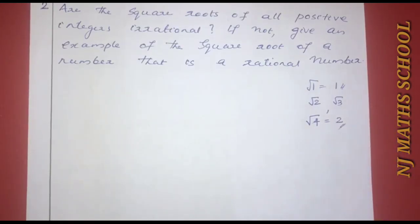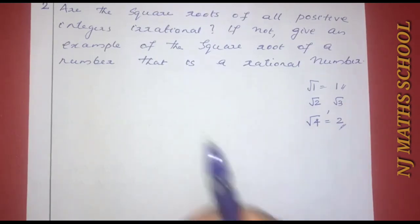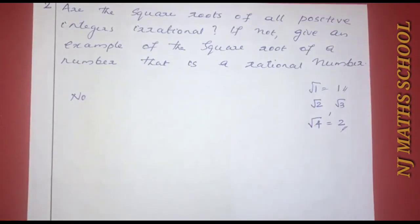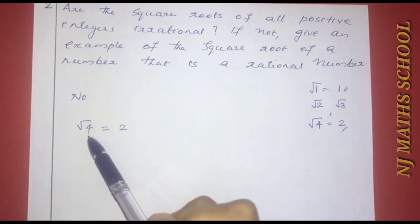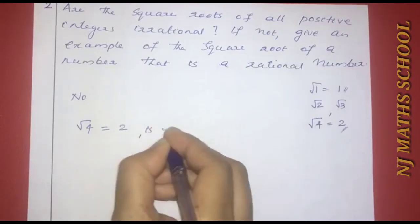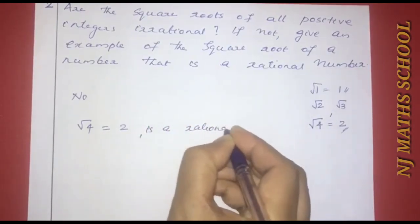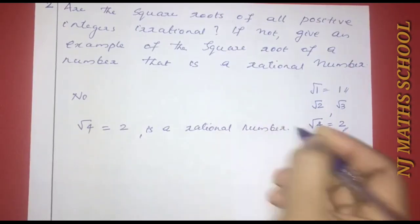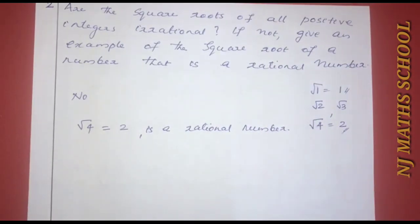No, the square roots of all positive integers are not irrational. For example, √4 = 2, which is a rational number. This shows that not all square roots of positive integers are irrational.